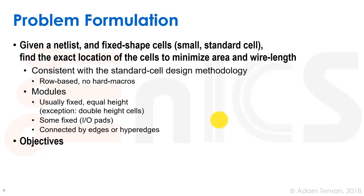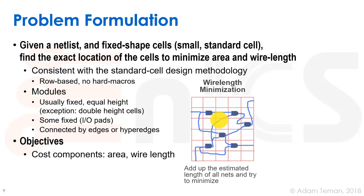The objectives of our placement are mainly to minimize the cost components. The cost components are area, but the area is actually given by the floor plan, so it's mainly to minimize the wire length.